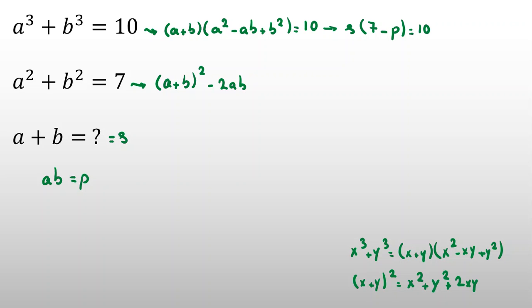The next identity is (x + y)² = x² + y² + 2xy. Here, (a + b)² - 2ab equals 7, giving us s² - 2p = 7. From the equation 7s - sp = 10, we can solve for p: p = (s² - 7)/2.